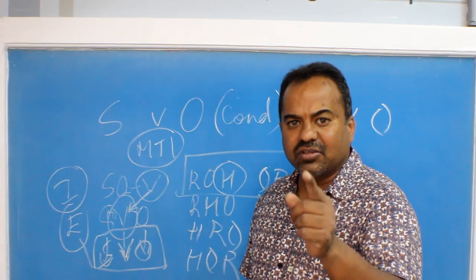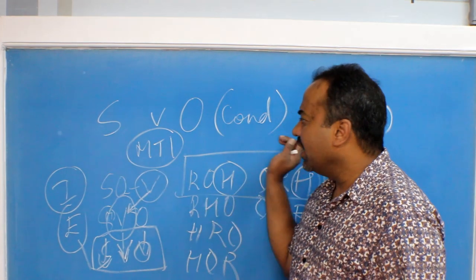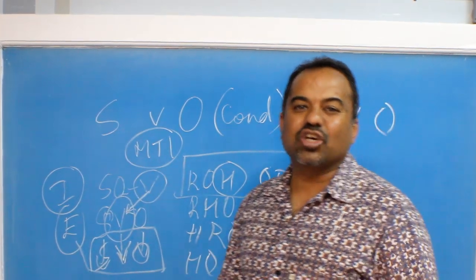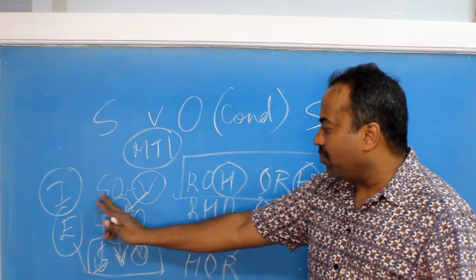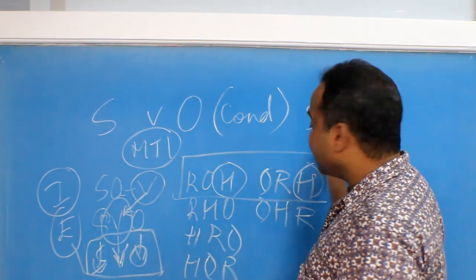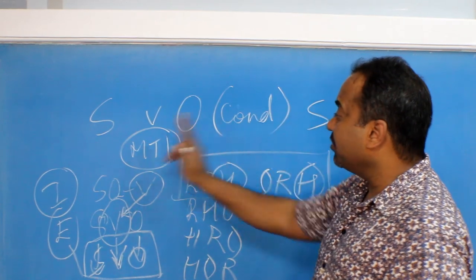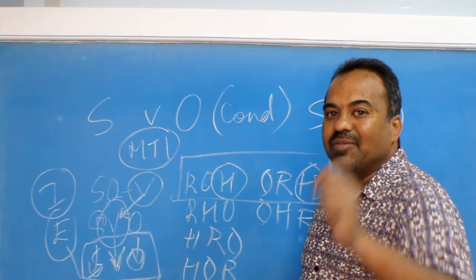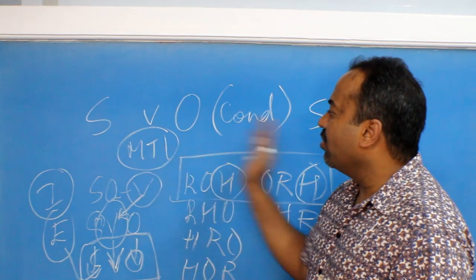So it becomes the rule of condition. A conditional sentence is a complex sentence. It has a subject, verb, and object — there are two of each: two subjects, two objects, and two verbs. Note that.